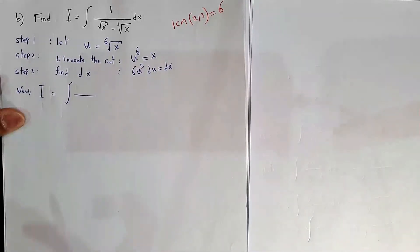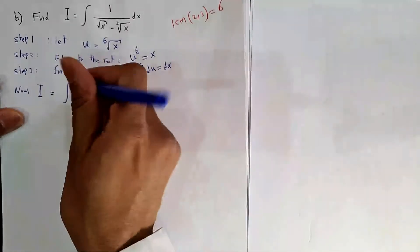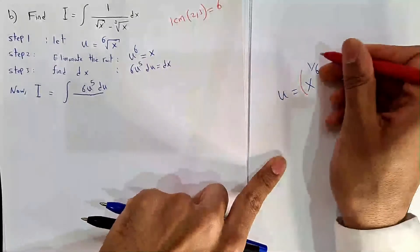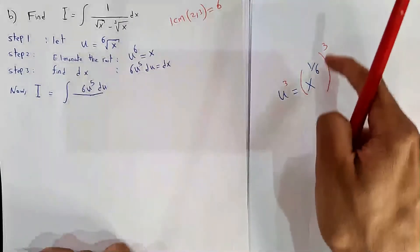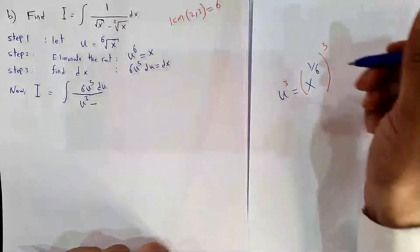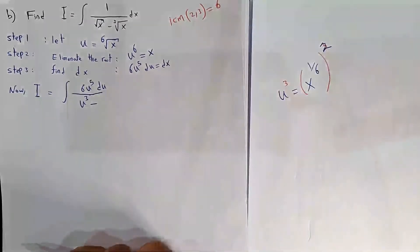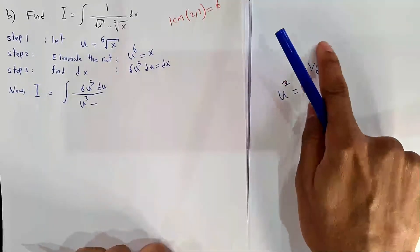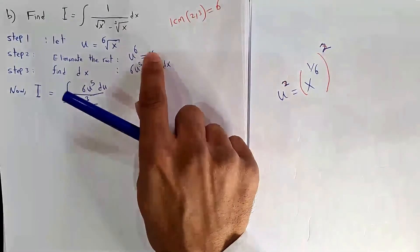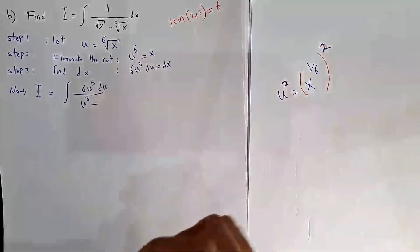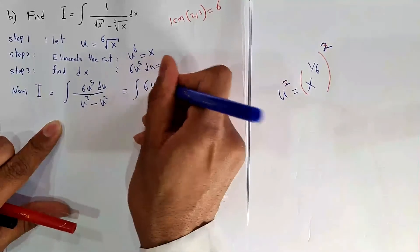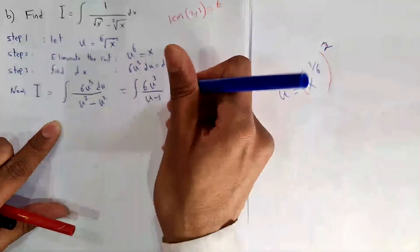Substituting into the integral: dx becomes 6u⁵ du. For √x, take power 3 of both sides of u⁶ = x to get x^(1/2) = u³. For ∛x, take the cube root to get x^(1/3) = u². After substituting and dividing numerator and denominator by u², upstairs I get 6u³ and downstairs I get u − 1.